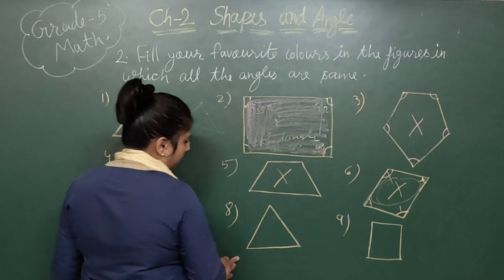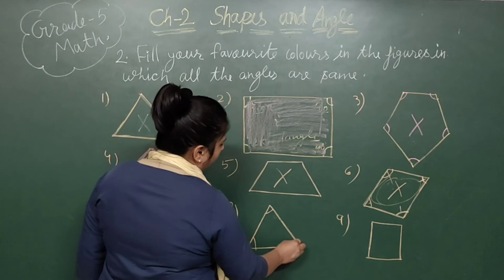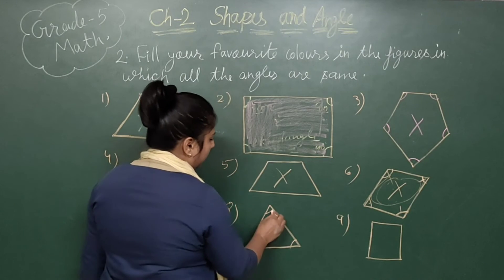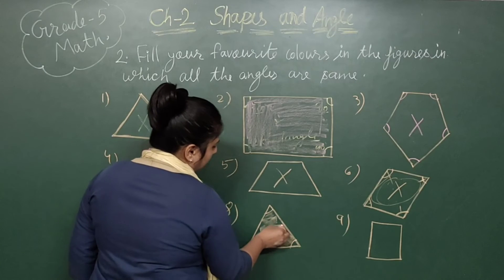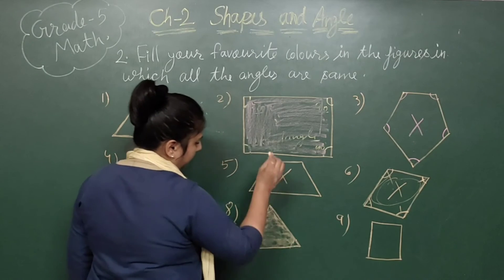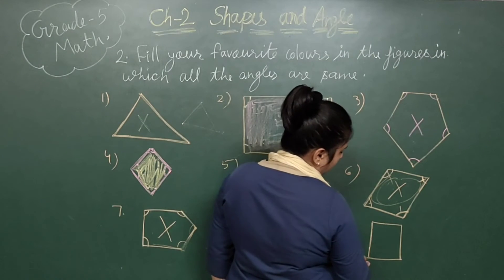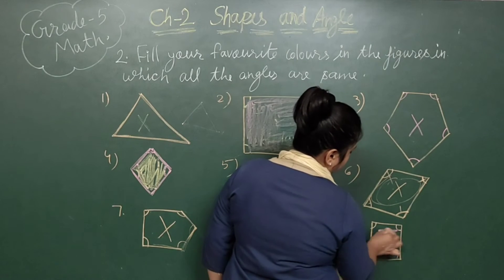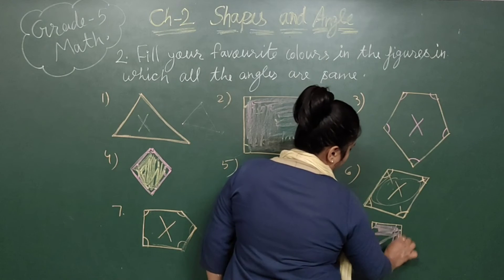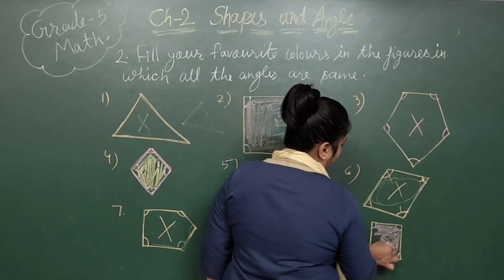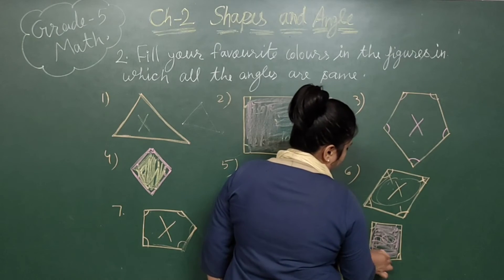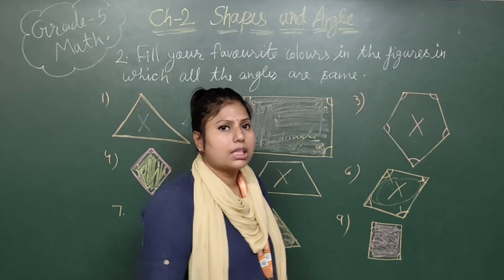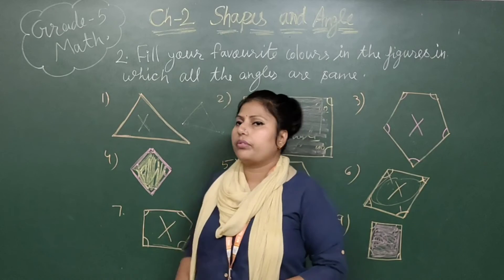Now see picture number 8. All sides are equal and all corners are also equal — you can say this shape has equal angles. So you can fill your favorite color. Now see picture number 9 — it also has four equal sides and four equal angles. So you can fill it with your favorite color, that is pink. You can fill in your workbook with your favorite color — whatever color you have. If the shape has equal sides and equal angles, then only you fill the fabric color.